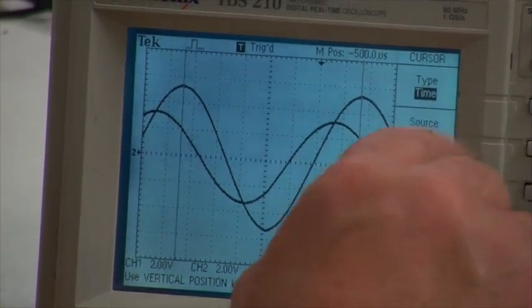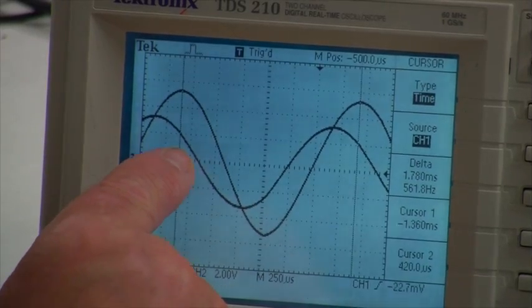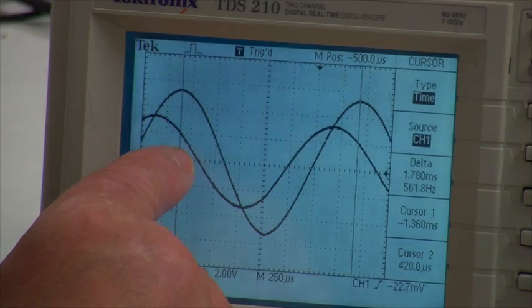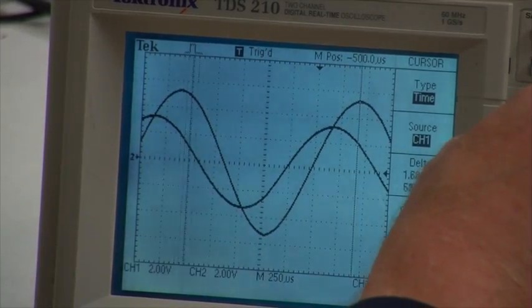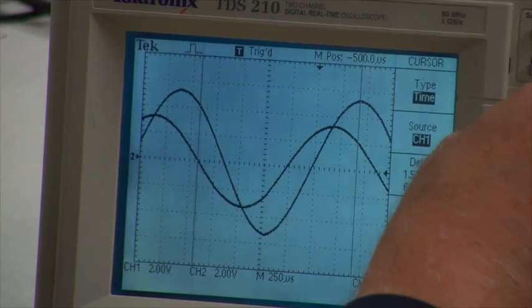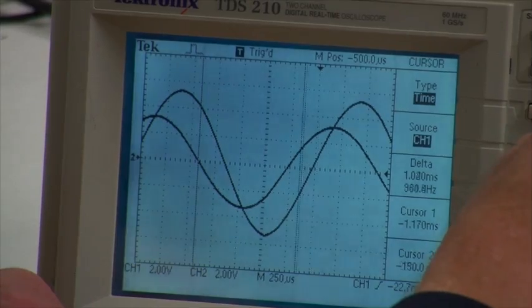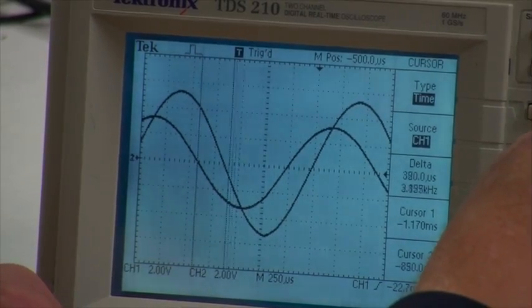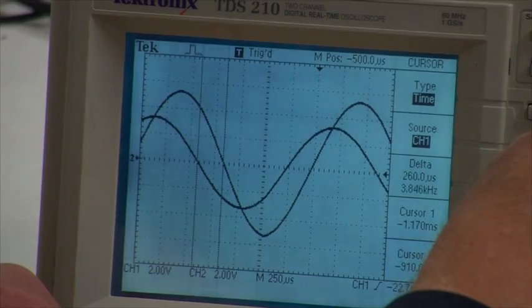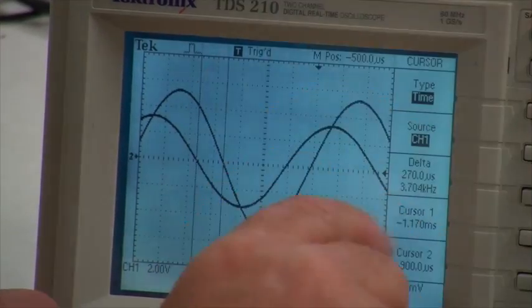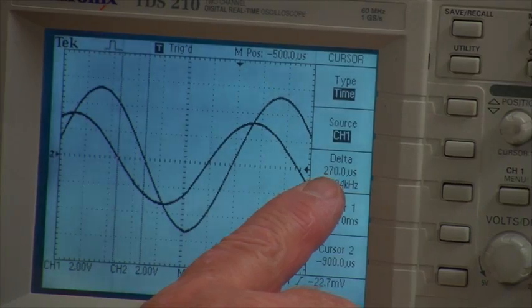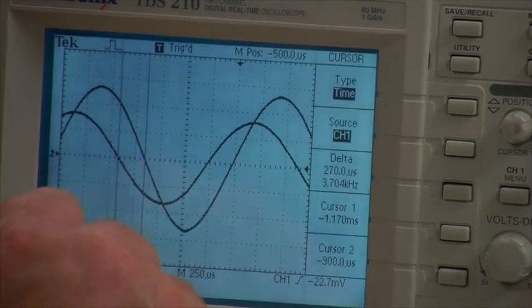We want time. I'll set one of the cursors right here at this descending node, and the other cursor right here at this descending node. The difference between them is about 270 microseconds.